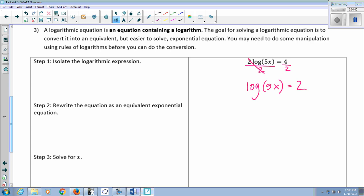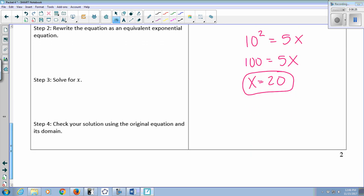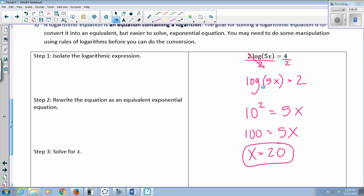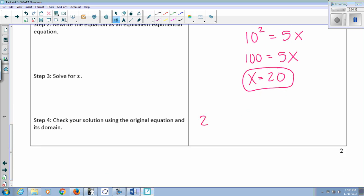Rewrite the equation as an equivalent exponential equation. Remember, there's a little invisible 10 here. That's your base. So rewrite this as an exponential equation. My base is 10. The log always equals the exponent. And then that should equal 5x. So this says 100 equals 5x, so x is 20. And you should always check in your original equation. 2 log of 5x, so I have 2 log of 5 times 20. Does that equal 4? Well, this is 2 log of 100. The log of 100 is 2, so this is 2 times 2, which is 4. Check.